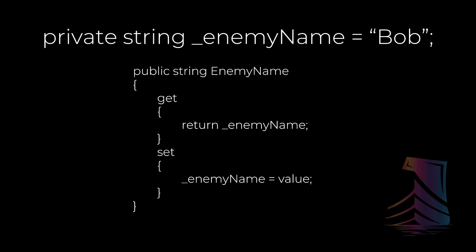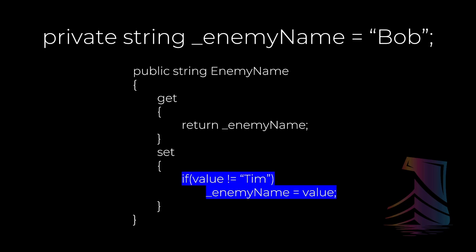We can add code within our get and set code blocks to make our property more robust. Like here, you can see we're doing a check in our setter that'll change the value only if it's not Tim. We really don't want our enemy to be named Tim. Using properties in that way is totally valid and is the essence of what properties are — they really are a more streamlined way of writing getters and setters.